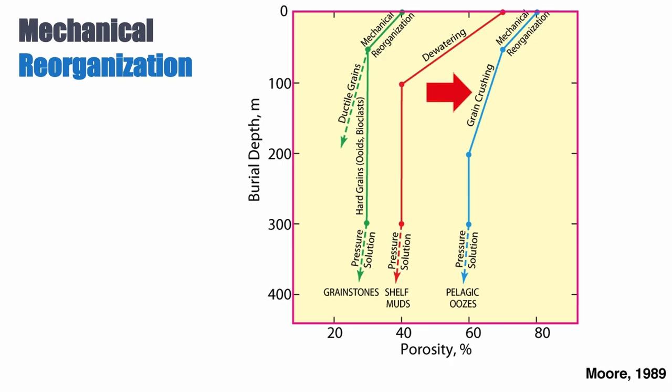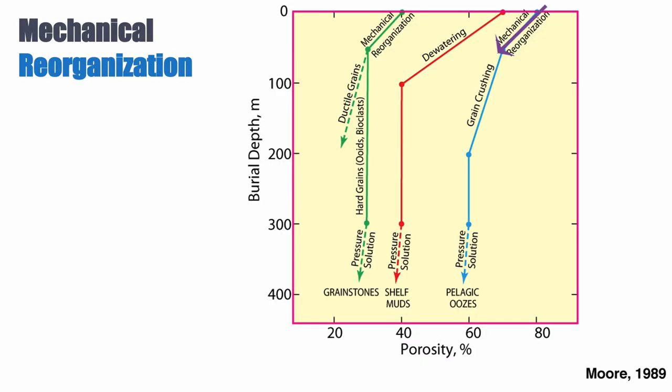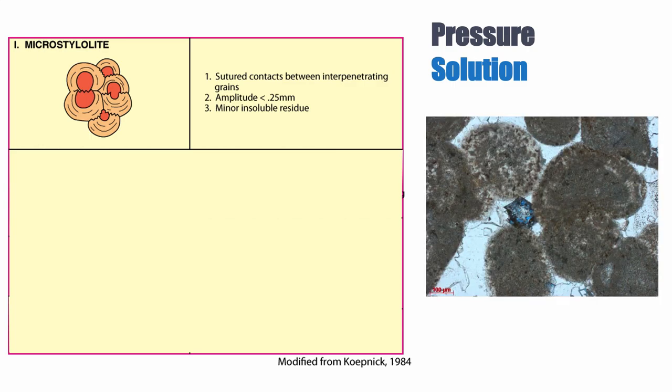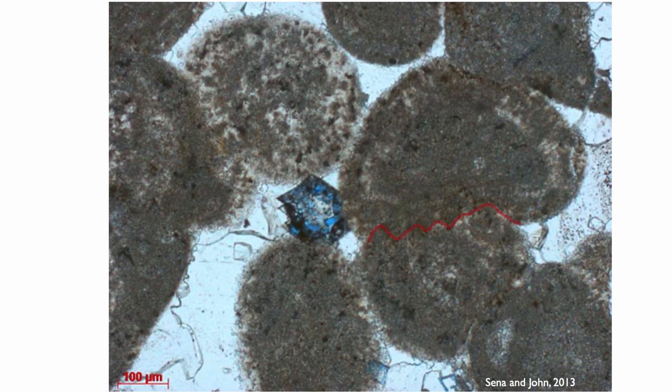Ooze is an intermediate case — solid components larger than mud but much smaller than grainstone. Ooze tends to undergo mechanical reorganization first, followed by grain crushing because these are fairly fragile grains, causing porosity loss, then nothing, then pressure solution causing further porosity decrease. Pressure solution can take several forms; it starts at grain contacts, where the grains in contact begin to dissolve, forming what we term micro-stylolites. Here's a beautiful example from the Lower Cretaceous of Oman — two pellets with a dissolution zone between them.